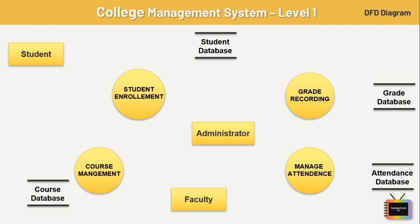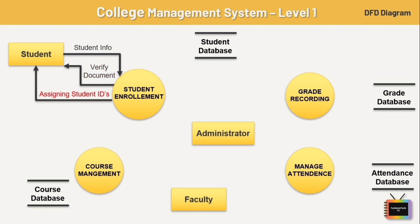Now let's see how data flows in this diagram. First, a student will share their information with the student enrollment process. The enrollment process will verify the student's documents, enroll the student for particular courses, share the student ID with the student, and then store the enrolled student info in the student database.